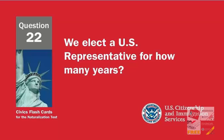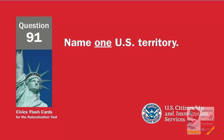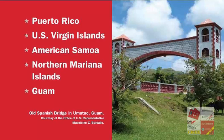We elect a U.S. Representative for how many years? Two. Name one U.S. territory. Puerto Rico. U.S. Virgin Islands. American Samoa. Northern Mariana Islands. Guam.